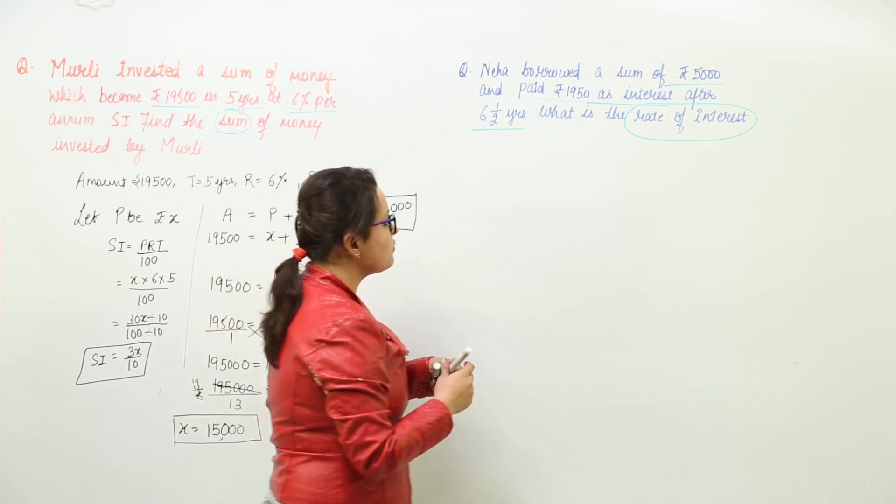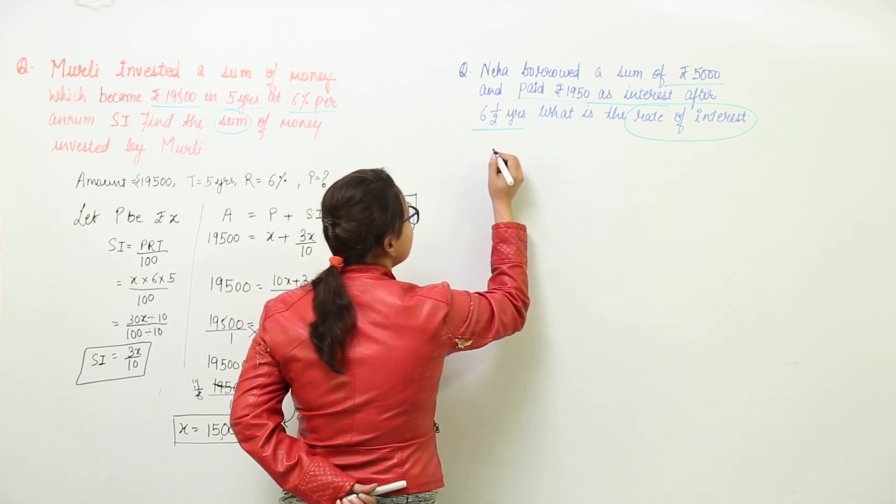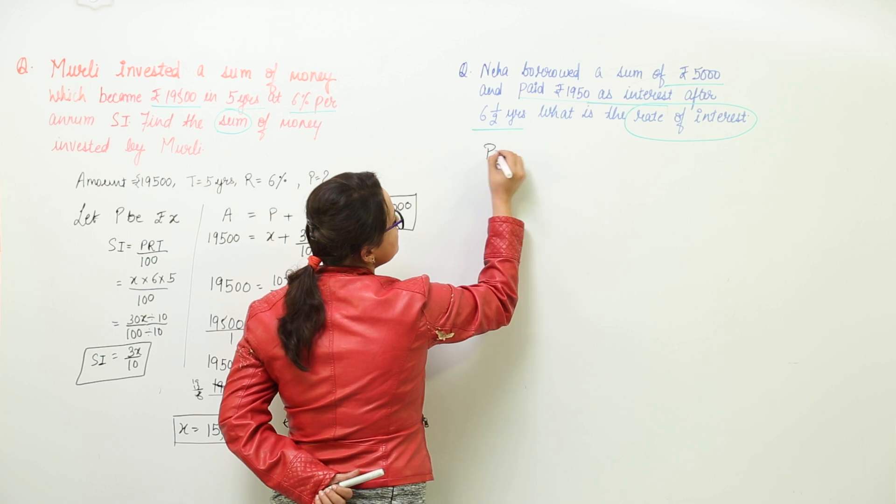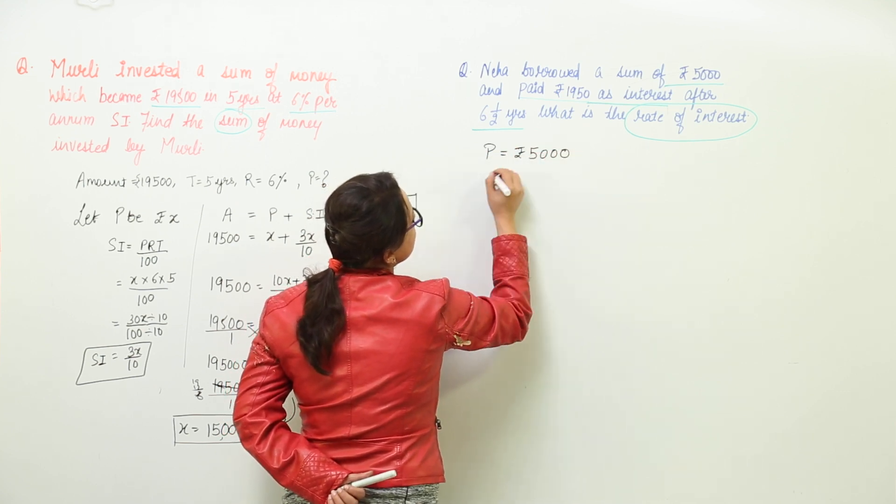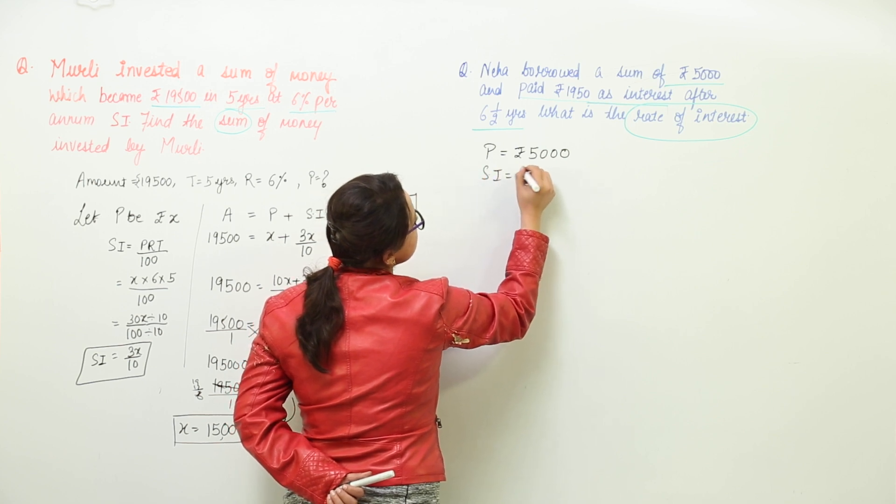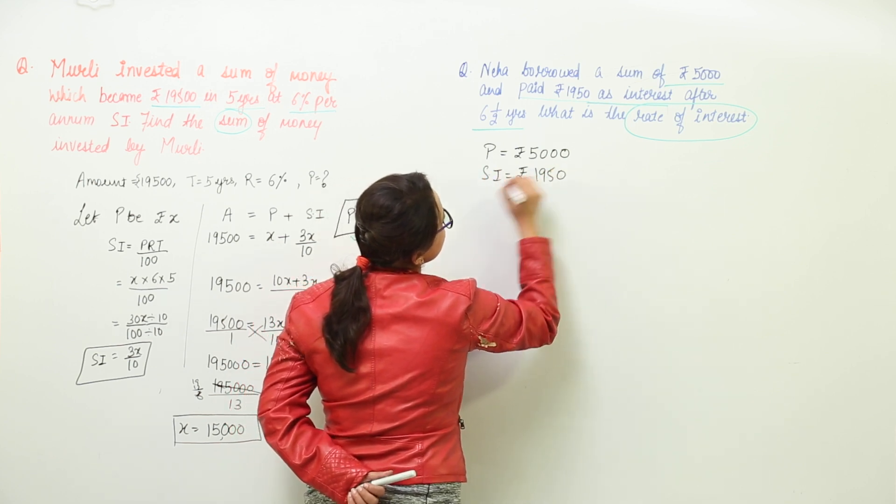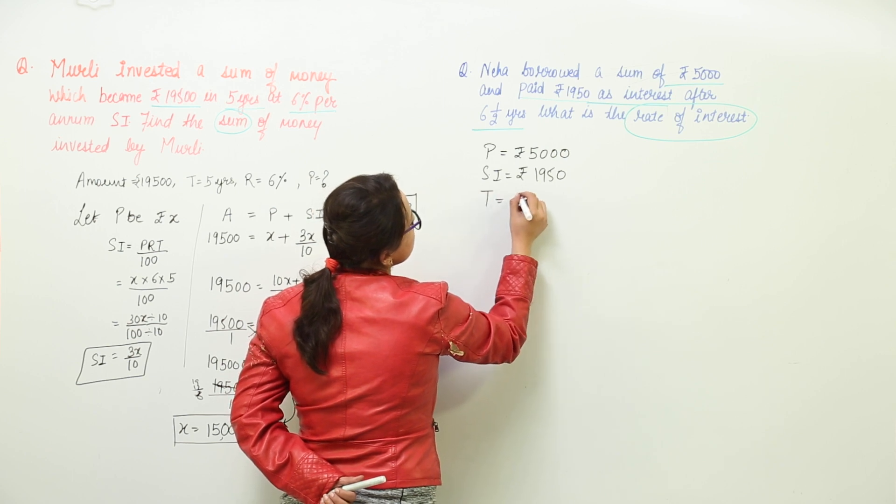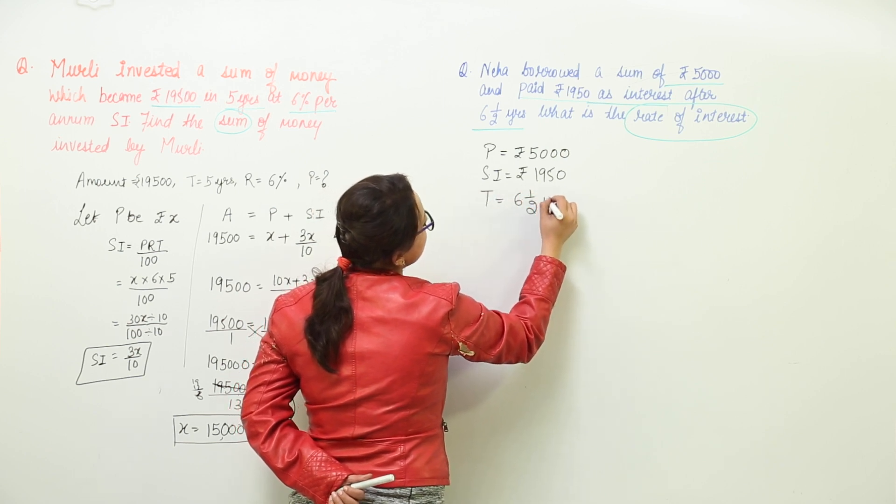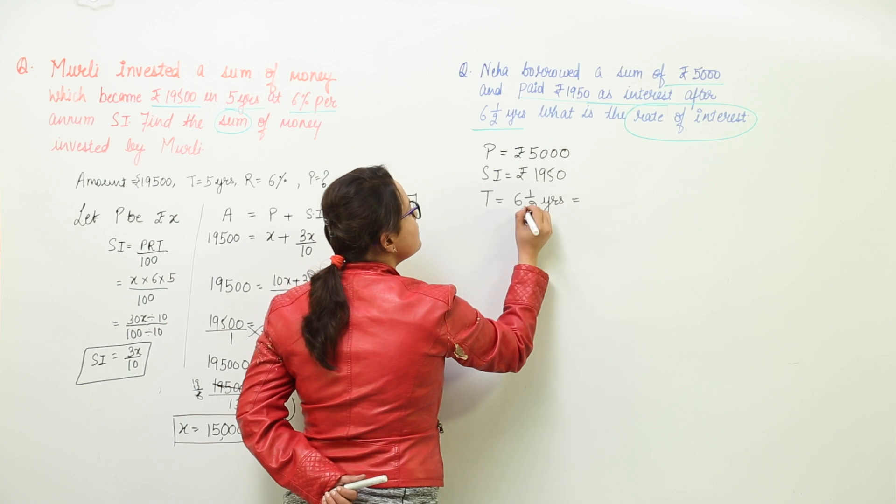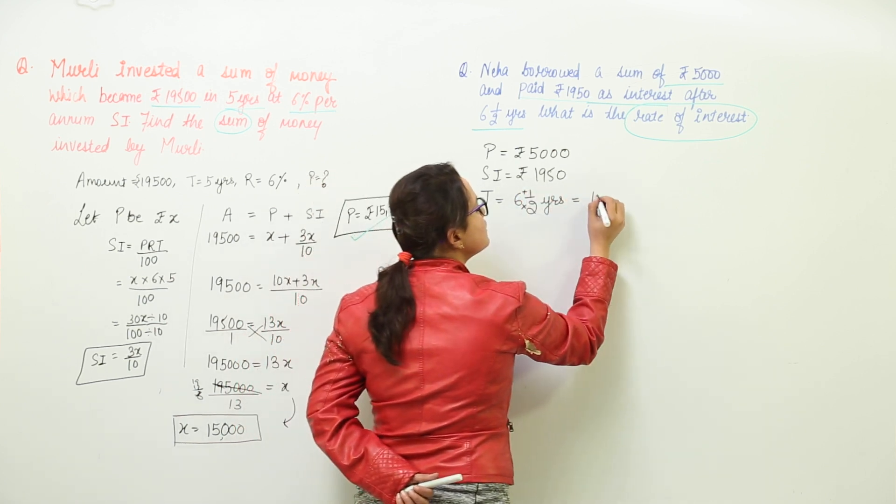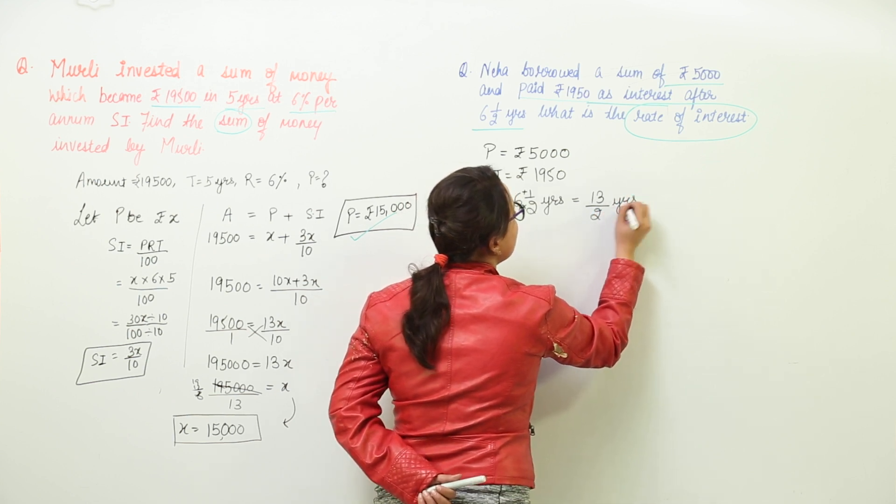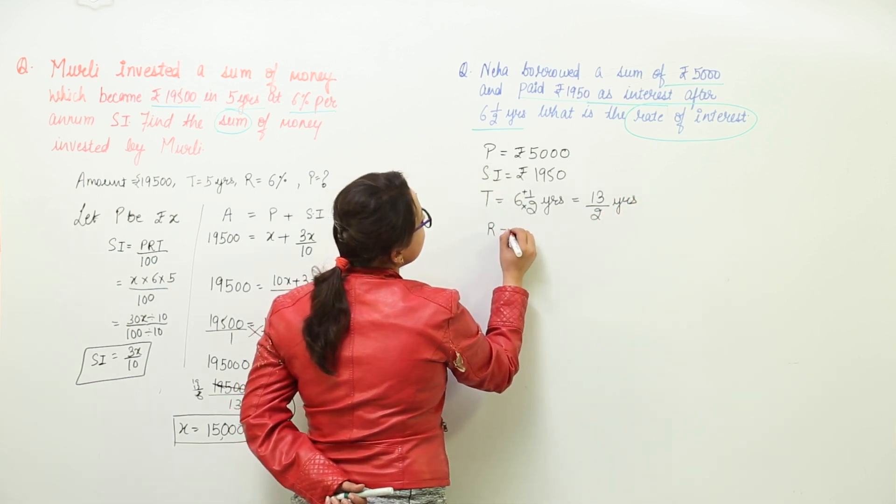So how do we calculate rate of interest? Simple enough let us write down all the values given. The principle is given to us as rupees 5000. The interest that has been given to us is rupees 1950. The time period is also given to us as 6 and a half years which can be simplified and written as 2 times 6 as 12 plus 1 13 upon 2 years and we have to find out the rate.